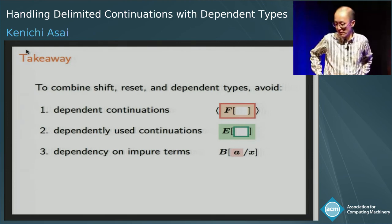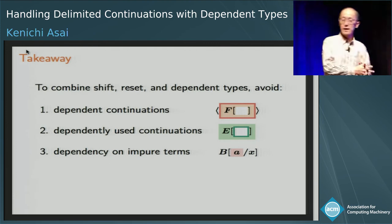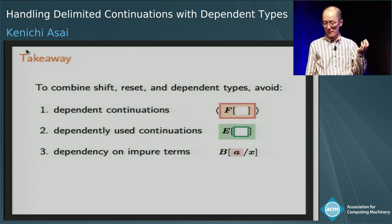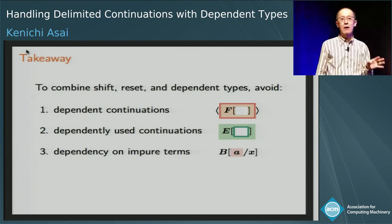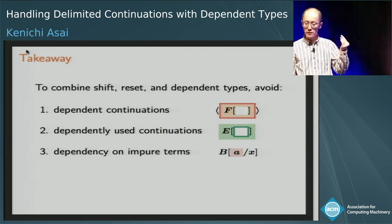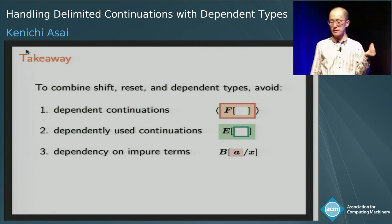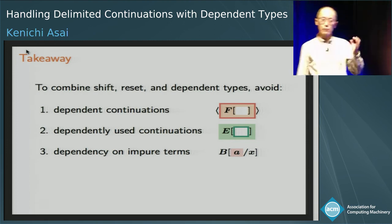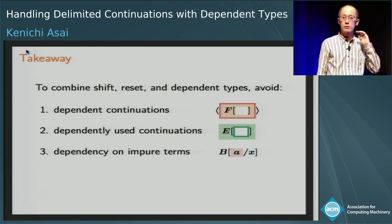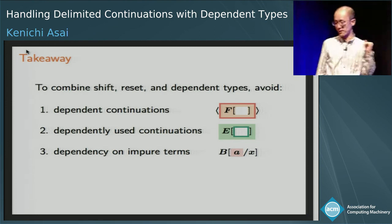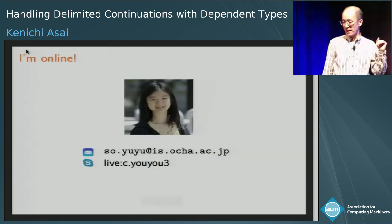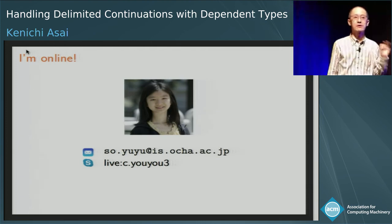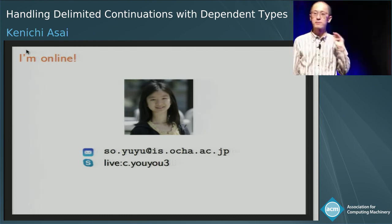Over the past decades, we have been programming with shift and reset and dependent types separately for various purposes. This study shows that with three restrictions — avoiding dependent continuations, dependently used continuations, and types depending on impure terms — we can combine them and have the best of both worlds. For example, we could extend a dependent language like Coq or Agda with shift and reset, which could be quite fascinating. Yoyo is online and ready to take any questions, comments, and feedback about dependent types and shift and reset. Thank you very much.